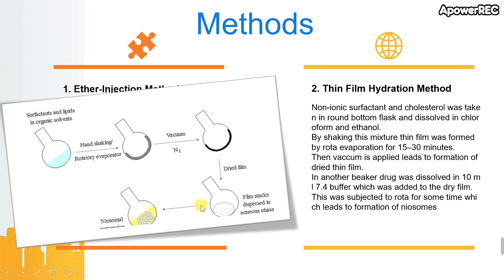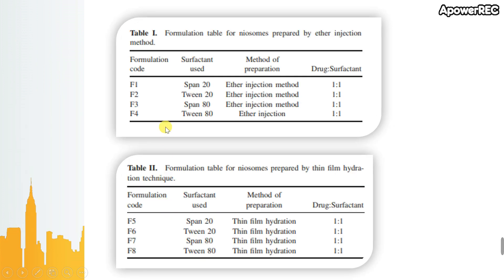The mixture was then subjected to rotary evaporation to form the neosome. The eight formulations were coded — the first four formed by ether injection method and the second four by thin film hydration method, with different types of surfactant and a constant drug-to-surfactant ratio.